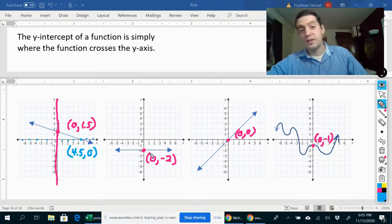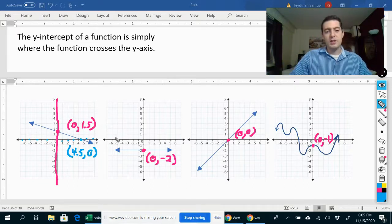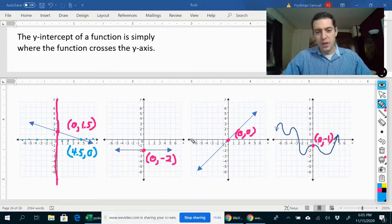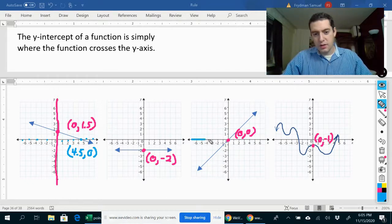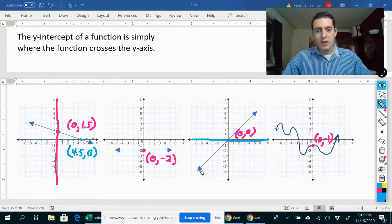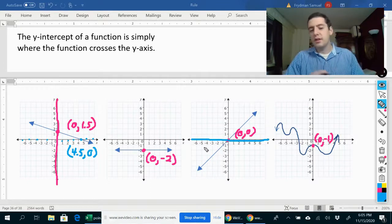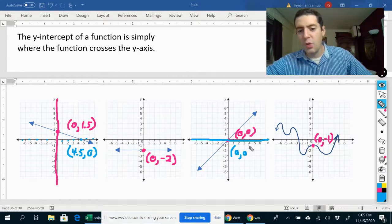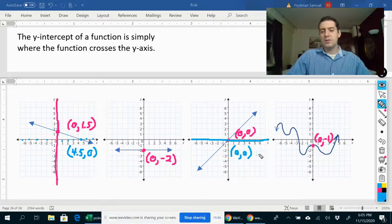This graph does not have an x-intercept because it never crosses the x-axis. For this one, the x-intercept would actually be, so where does it, here's the x-axis, right? So where does this graph cross the x-axis? It crosses it right over here. So here, the x-intercept is exactly the same as the y-intercept, which is the origin zero, zero.